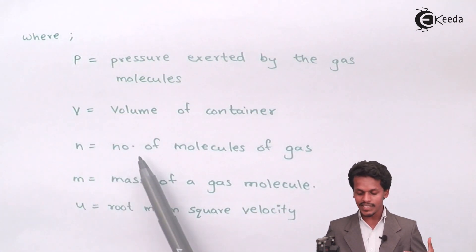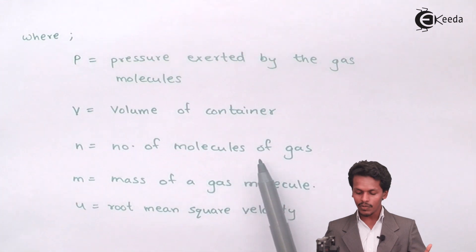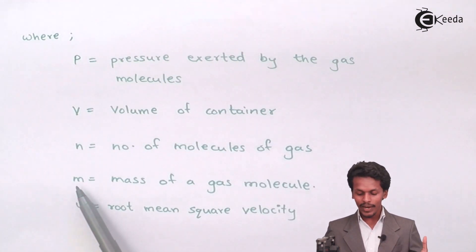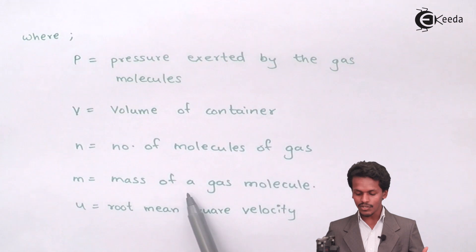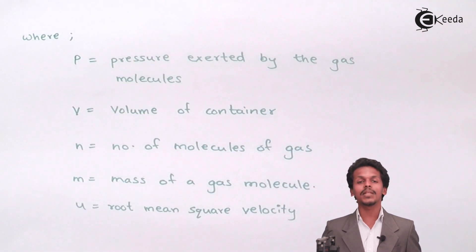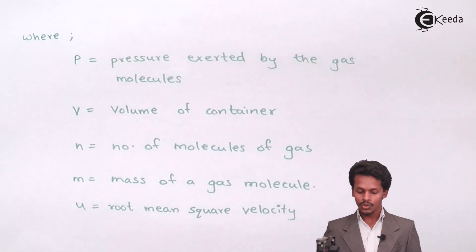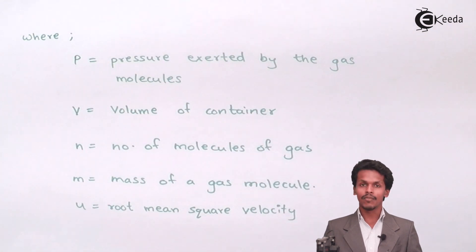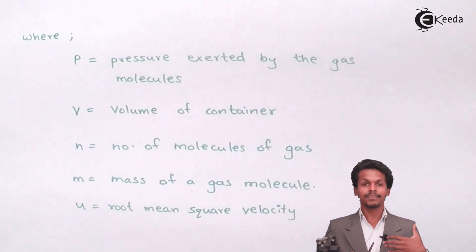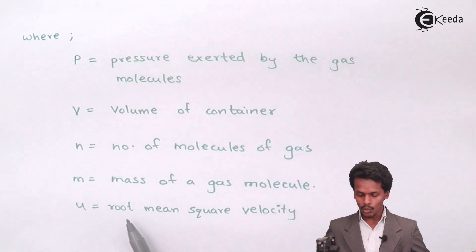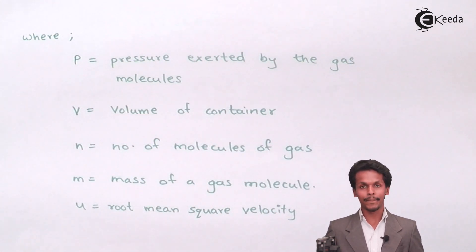Small n represents the number of molecules of gas placed in the container, while small m is the mass of a single gas molecule. There would be n number of molecules present in the volume of the gas. U is the root mean square velocity.